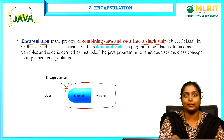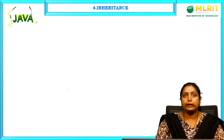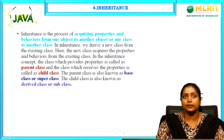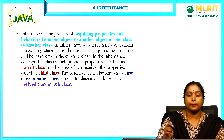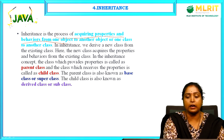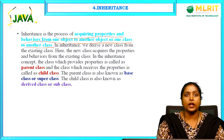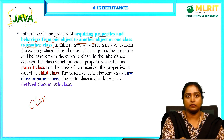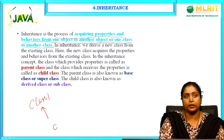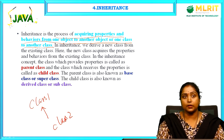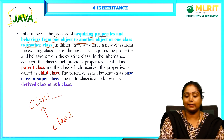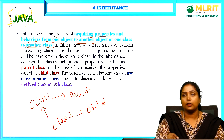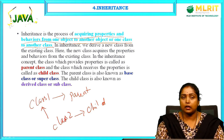Inheritance: acquiring the properties from one class to another class is known as inheritance. The process of acquiring properties and behaviors from one class to another class is inheritance. Class two inheriting the properties from class one — class one is known as the parent class and class two is known as the child class.